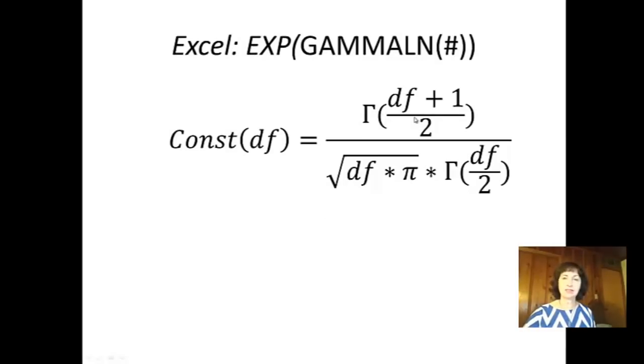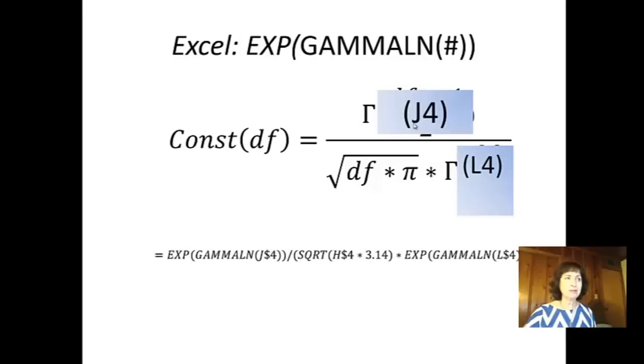It depends on gamma function. And gamma function is generalization of factorial function. We will record this degree of freedom in specific cells so that we can simplify this in Excel as gamma logarithm and then exponent because Excel doesn't have gamma function. It has logarithm of gamma function. Square root of the degree of freedom times pi is a very simple thing to record in Excel.